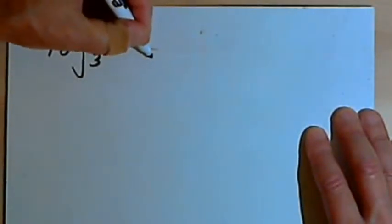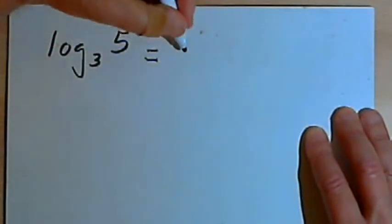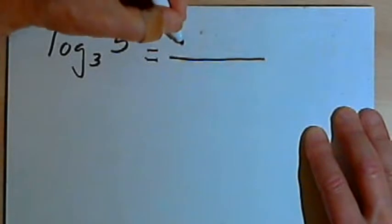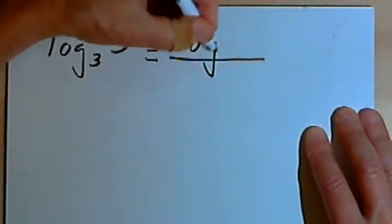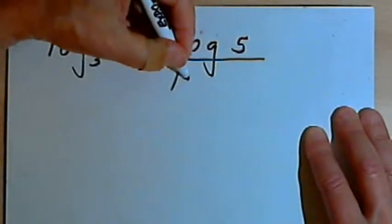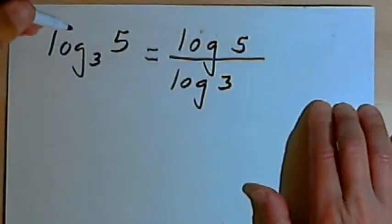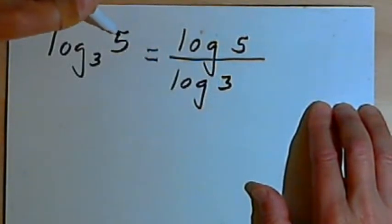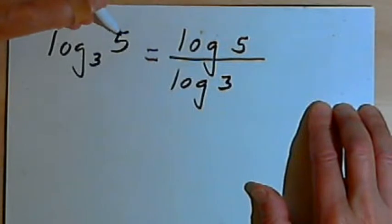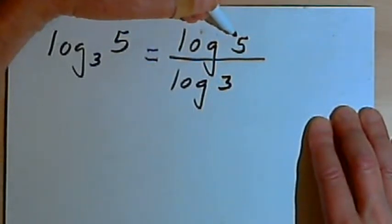The change of base rule says I can take this logarithm and turn it into a fraction. The numerator of the fraction will be the log of 5 and the denominator will be the log of 3. So here's what I did. I took the number that I originally wanted to take the log of, that was log base 3 of 5. I took that 5 and I just wrote log of 5. That's the numerator.